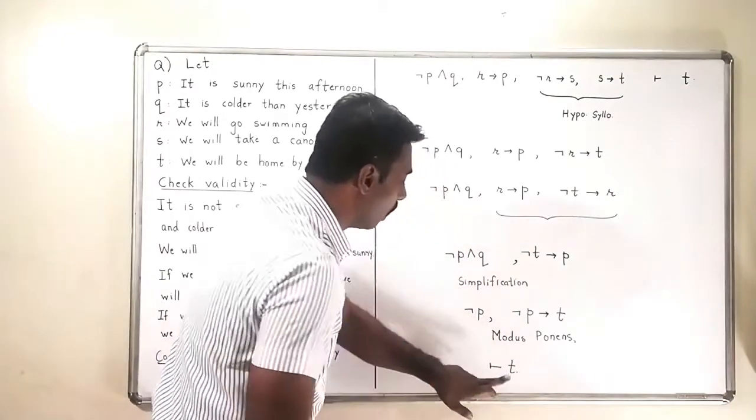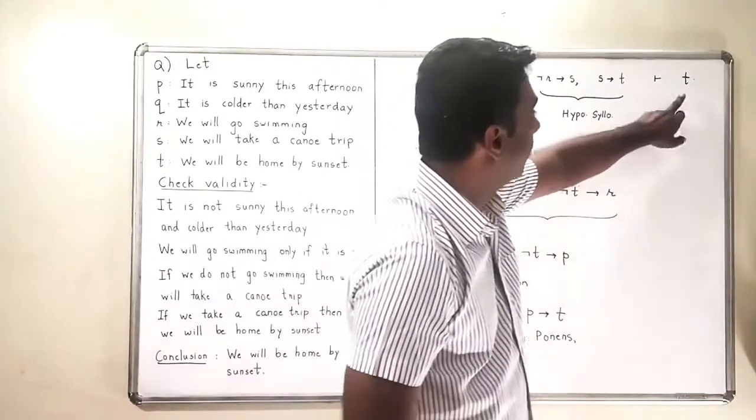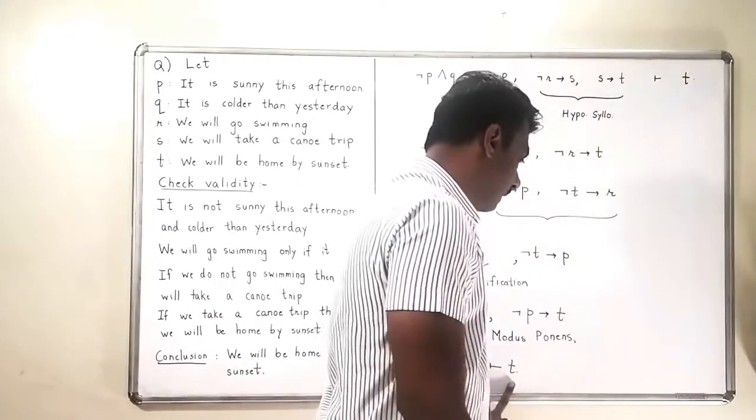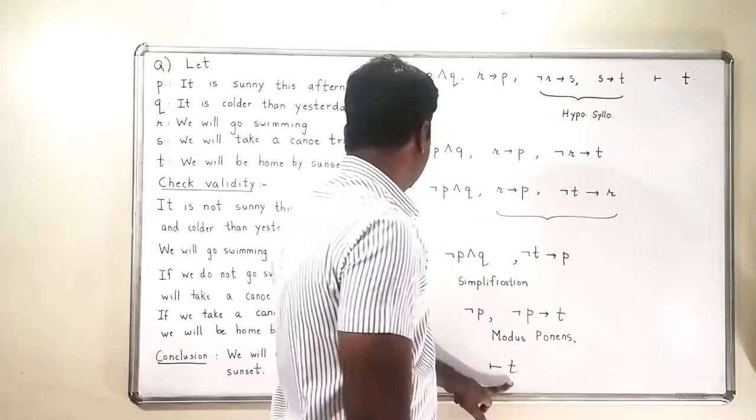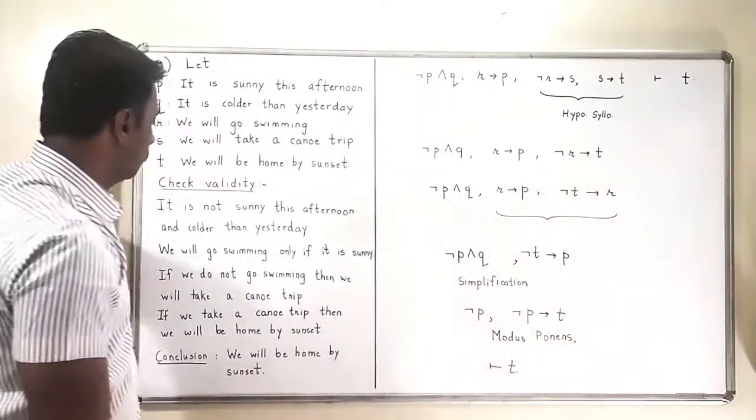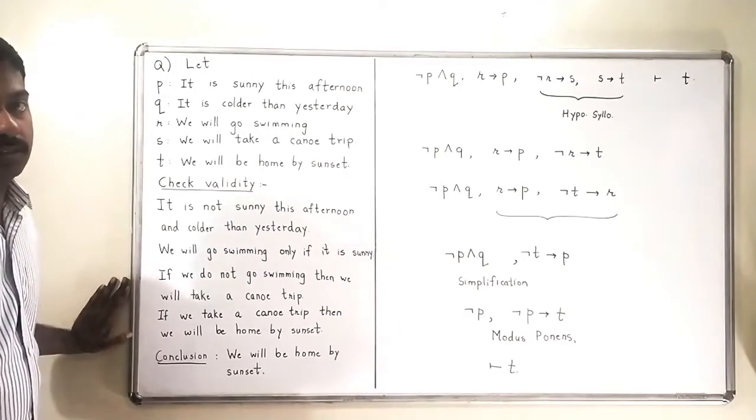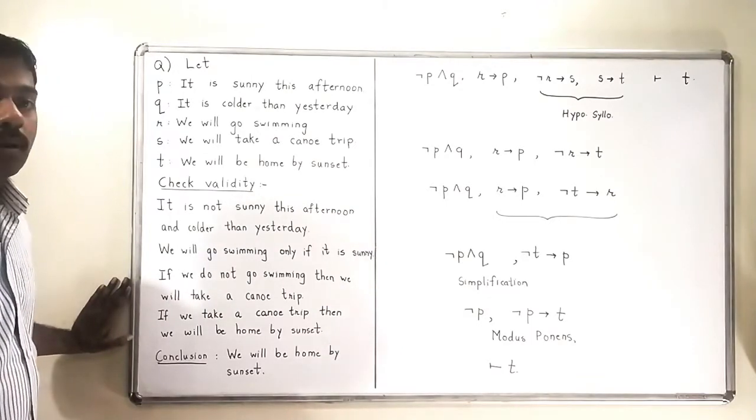And this is what we were expecting. So we have got the conclusion T, and this means that this particular argument is a valid argument. So this ends the problem here.